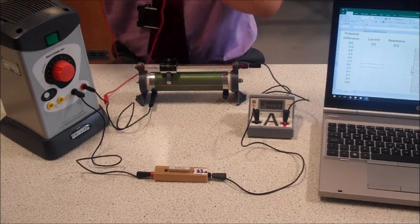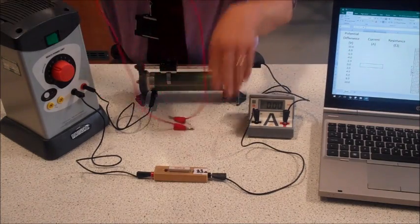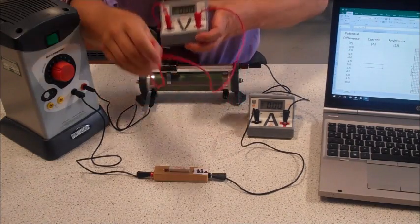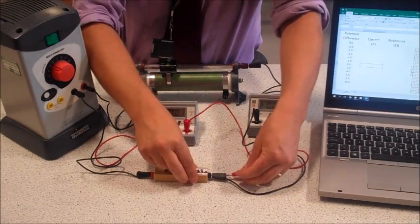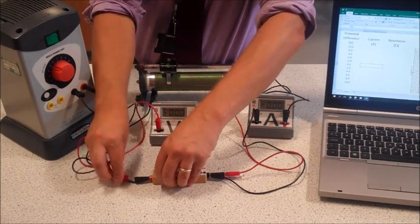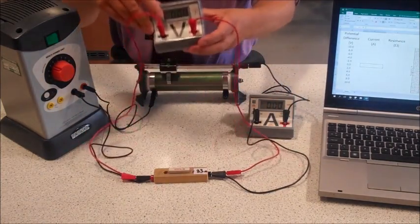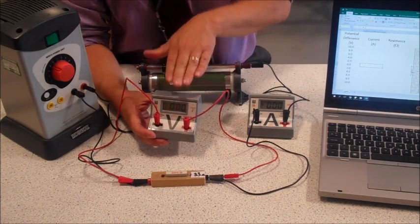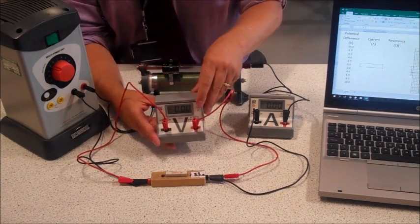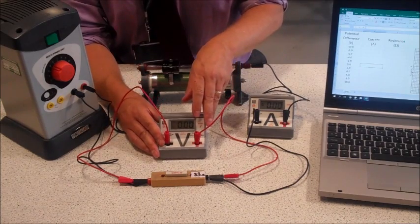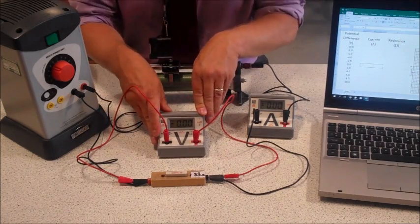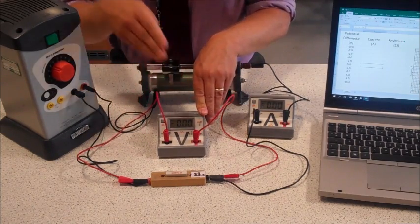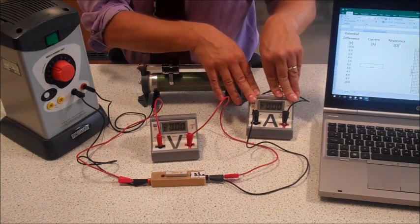What I will just do is we need a voltmeter because remember we're going to be looking at the current voltage or current potential difference. So we'll need a voltmeter to set a potential difference over this resistor and we're going to set a range of potential differences from 0 to 10 volts. We're going to go up in steps of 2 volts.